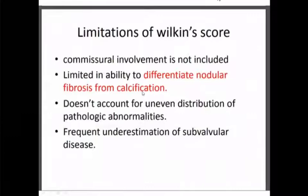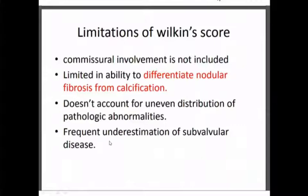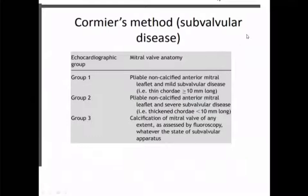Limitations of the Wilkins score include: it does not assess nodular fibrosis, cannot differentiate fibrosis from calcification, does not include commissural involvement, does not account for uneven distribution of pathology, and frequently underestimates subvalvular disease. The Cormier score is an alternative, classifying patients into three groups based on valve pliability, calcification, and subvalvular involvement — group 3 includes significant subvalvular apparatus involvement with calcification.